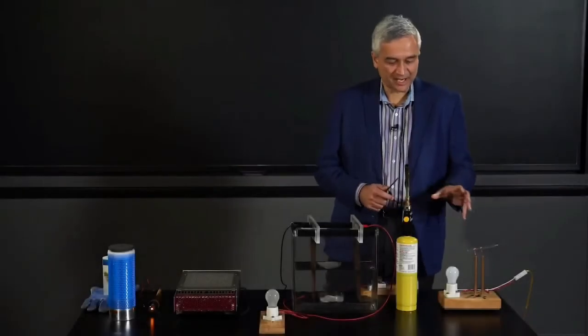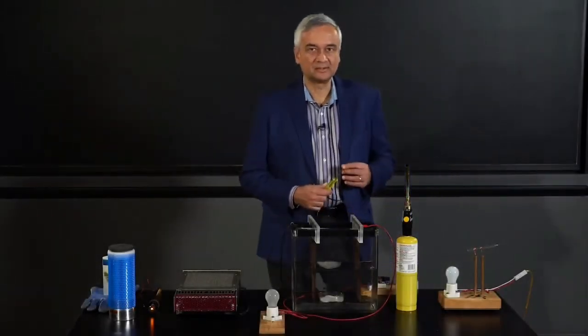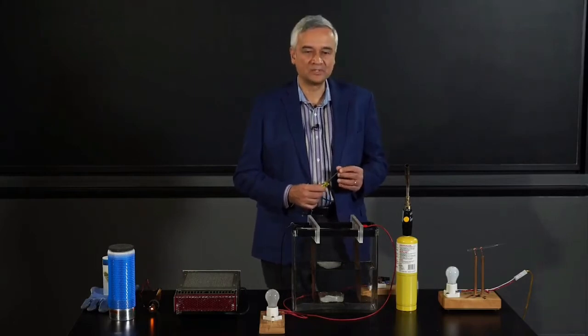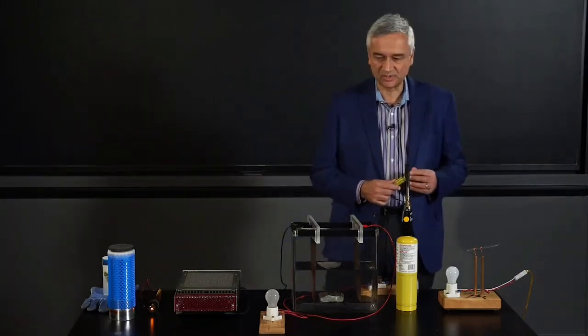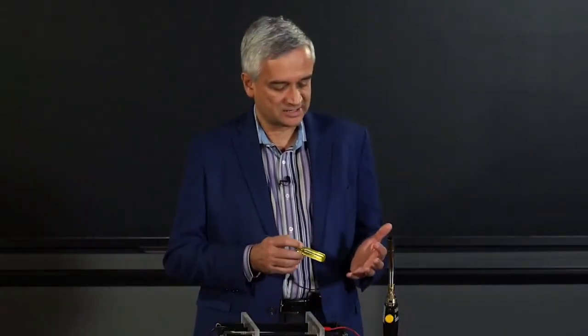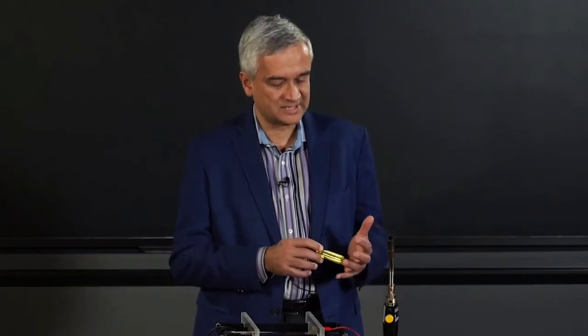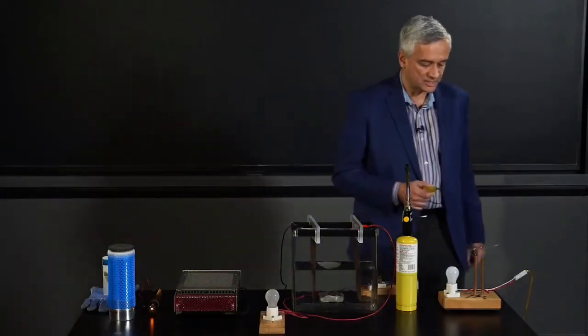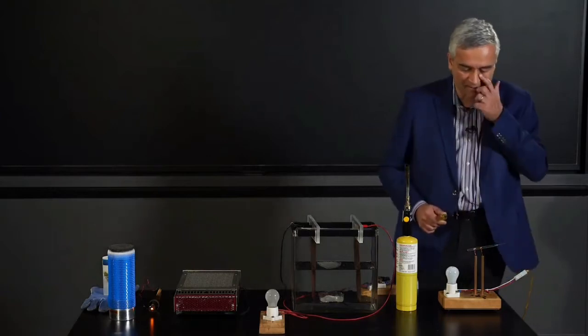Today we're going to do three demonstrations which together we're going to use to illustrate how we can understand our result for the conductivity of a material, which we worked through in a simplified Drude model. The conductivity turned out to depend on n times e squared times tau divided by the mass of the electron. We can't change the mass or charge of the electron, but let's think about n — the number density of charge carriers — and we're going to change that in this experiment.